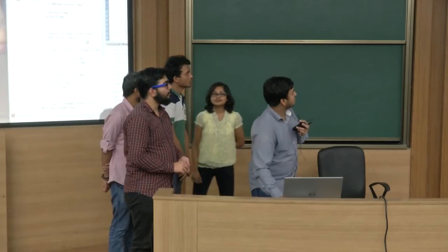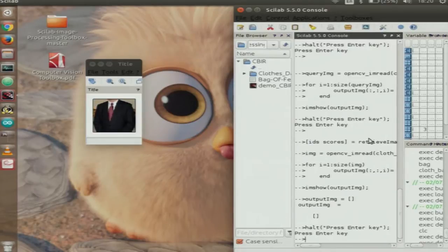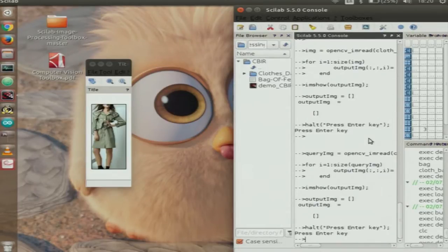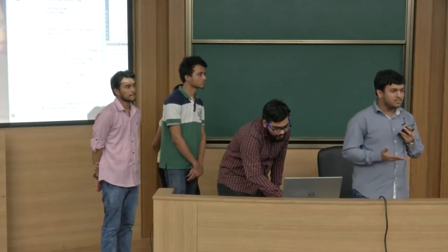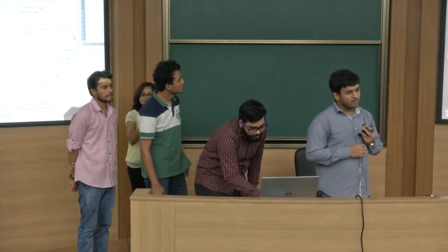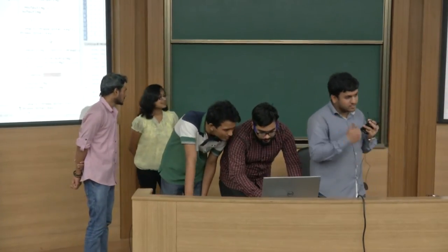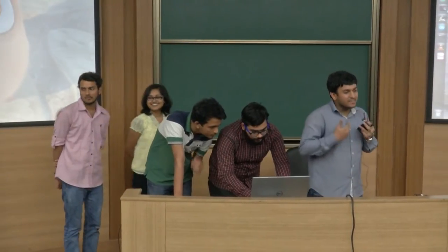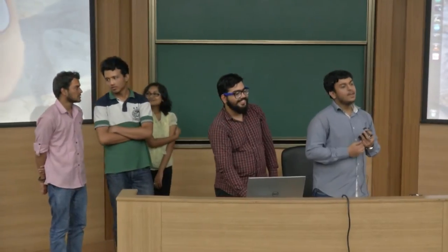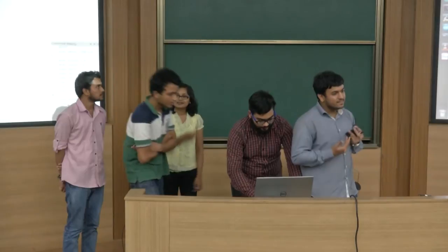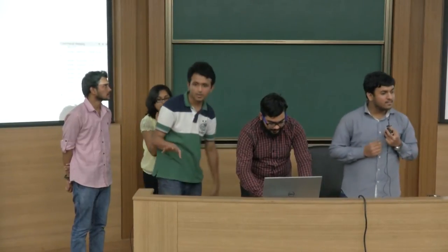Continuing with the recommender system demo, similar images are retrieved for test cases. An examiner asks: if someone removes their tie, will the algorithm suggest a coat? The team says it will give the most similar match. An examiner clarifies that if wearing a tie, the next closest match would be an evening coat; removing the tie means it won't be the closest match anymore. The test is confirmed as valid since it finds the most similar image.